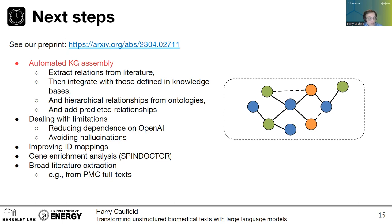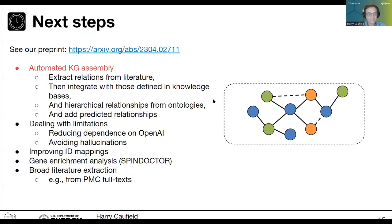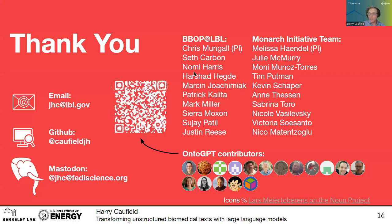The overall goal is to do broad literature extraction, in some cases from full text like PubMed Central. With that, I'd like to say thank you to the audience and to everyone in my team in the Berkeley Bioinformatics Open Source Projects group at Lawrence Berkeley Lab, as well as everyone on the team for the Monarch Initiative. My email and GitHub can be found here, and I'm on Mastodon at the Fosstodon Science instance. Please scan the QR code if you'd like to try out OntoGPT and SPIRES for yourself.